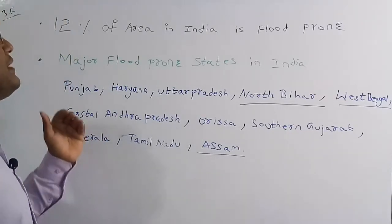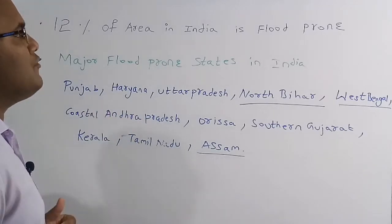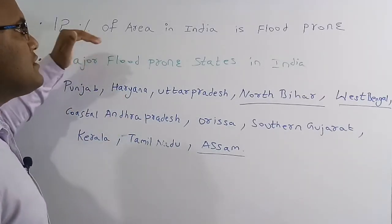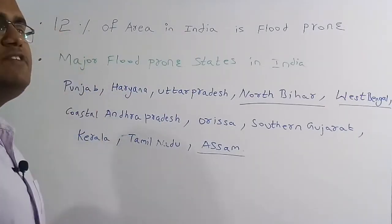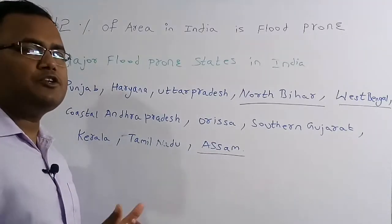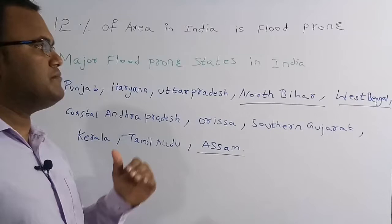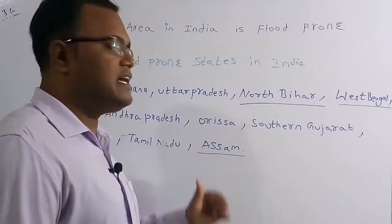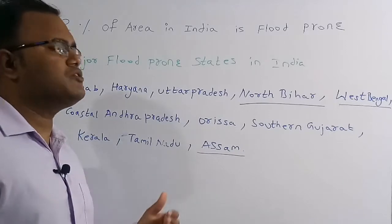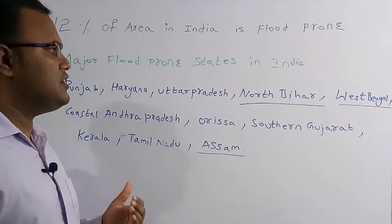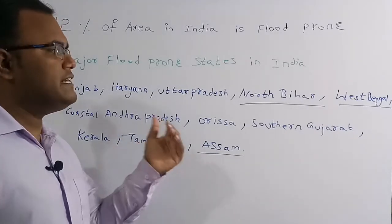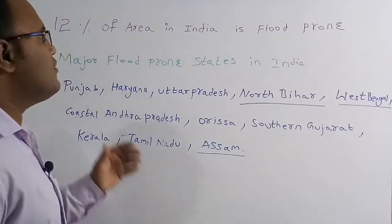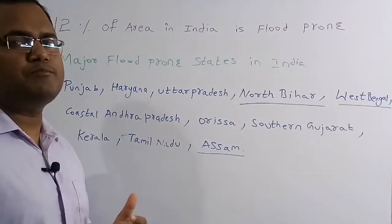So, 12% of the area in India is flood-prone. The correct solution is 12%. If they ask which states have the most severe floods, the answer is North Bihar, West Bengal, and Assam. The remaining states also experience floods, but to a lesser extent. Now we move to the 37th question.